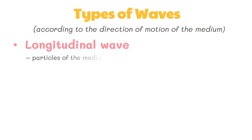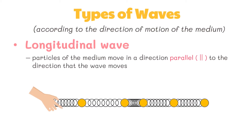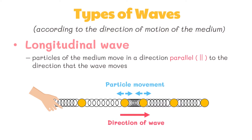A longitudinal wave is a wave in which particles of the medium move in a direction parallel to the direction that the wave moves. Suppose that a slinky is stretched out horizontally and a pulse is introduced on the left end by vibrating the first coil left and right. Energy will begin to be transported through the slinky from left to right. As the energy is transported, the individual coils of the medium will be displaced leftwards and rightwards. In this case, the particles of the medium move parallel to the direction that the pulse moves. Longitudinal waves are always characterized by particle motion being parallel to wave motion.